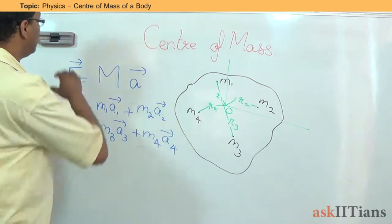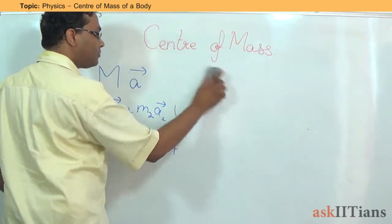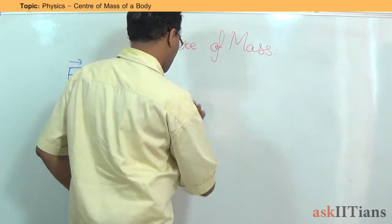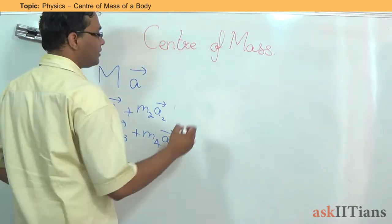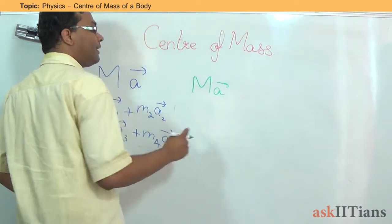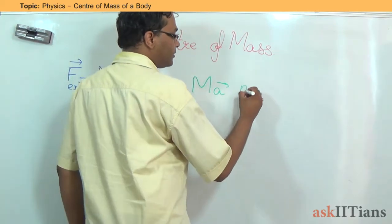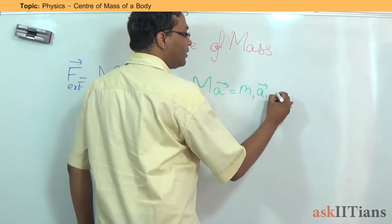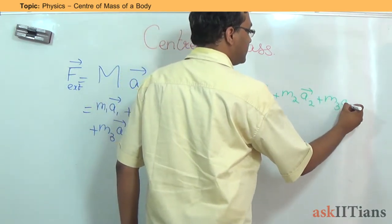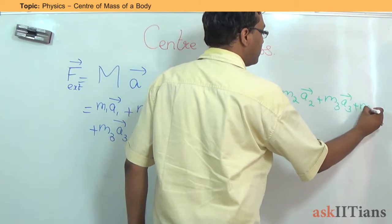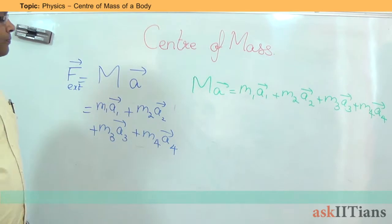So let me rewrite this. I can write it this way, that M into A, where M capital stands for the total mass of the object, or the whole object, this will be equal to m1 a1 plus m2 a2 plus m3 a3 plus m4 a4. These are the individual forces.